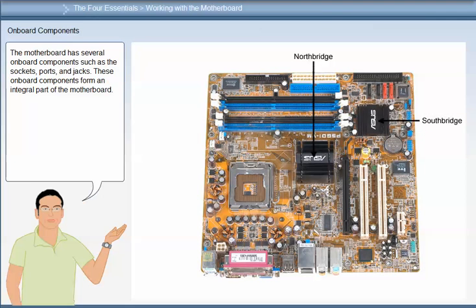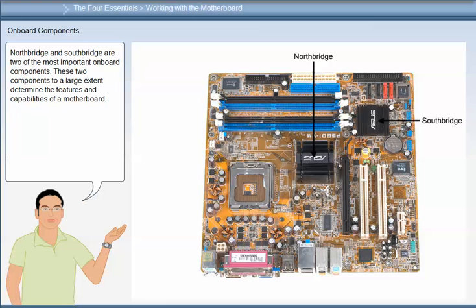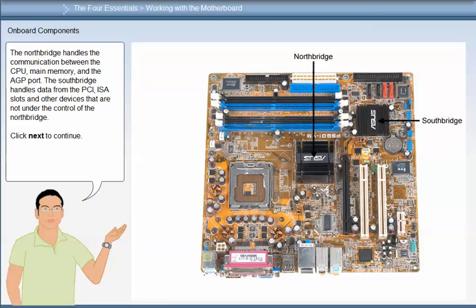The motherboard has several onboard components such as sockets, ports and jacks. These onboard components form an integral part of the motherboard. Northbridge and Southbridge are two of the most important onboard components, which to a large extent determine the features and capabilities of a motherboard. The Northbridge handles the communication between the CPU, main memory and the AGP port. The Southbridge handles data from the PCI and ISA slots and other devices not under the control of the Northbridge.